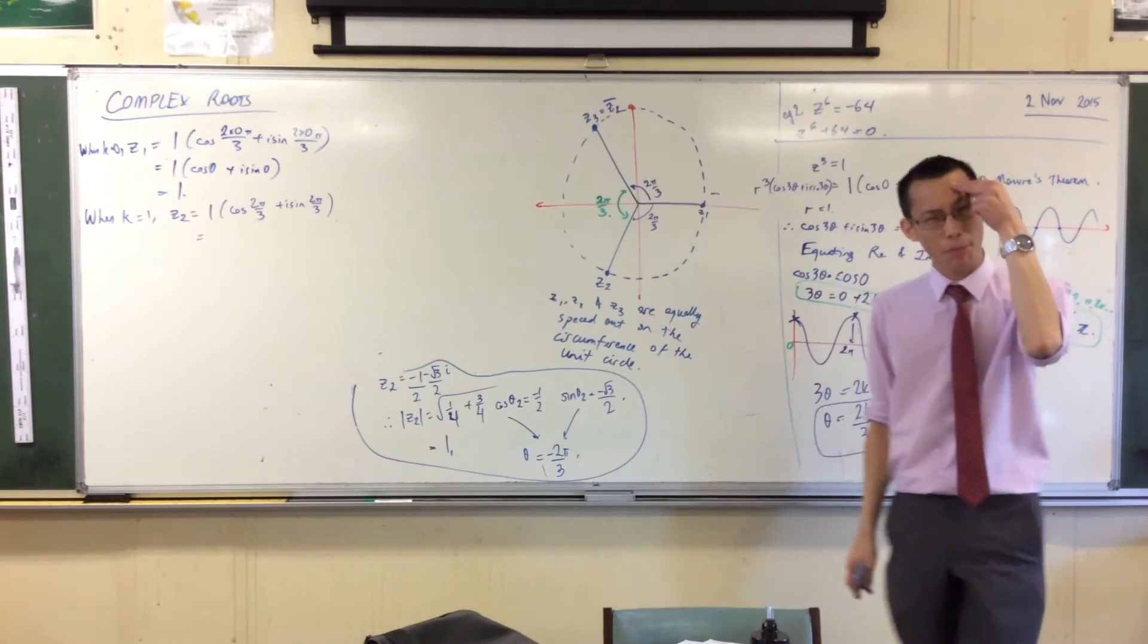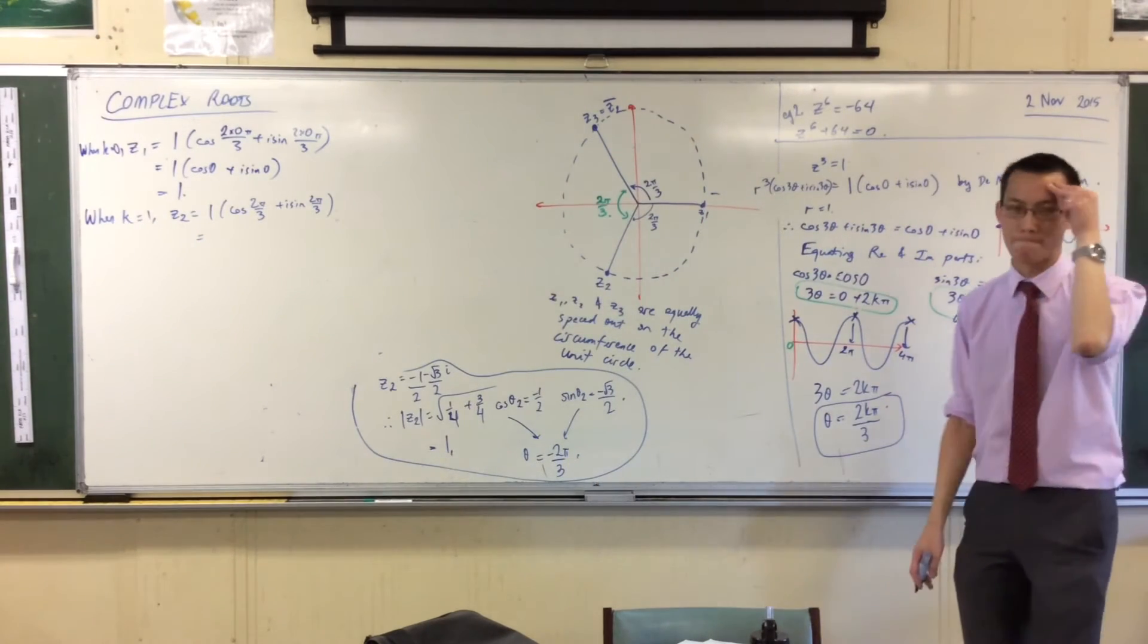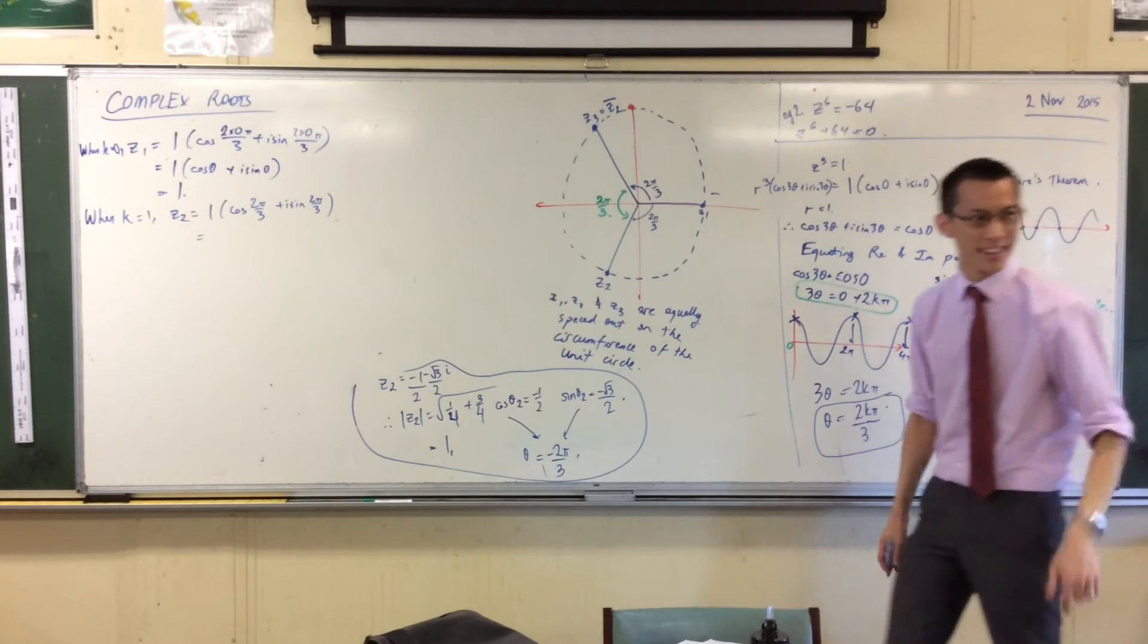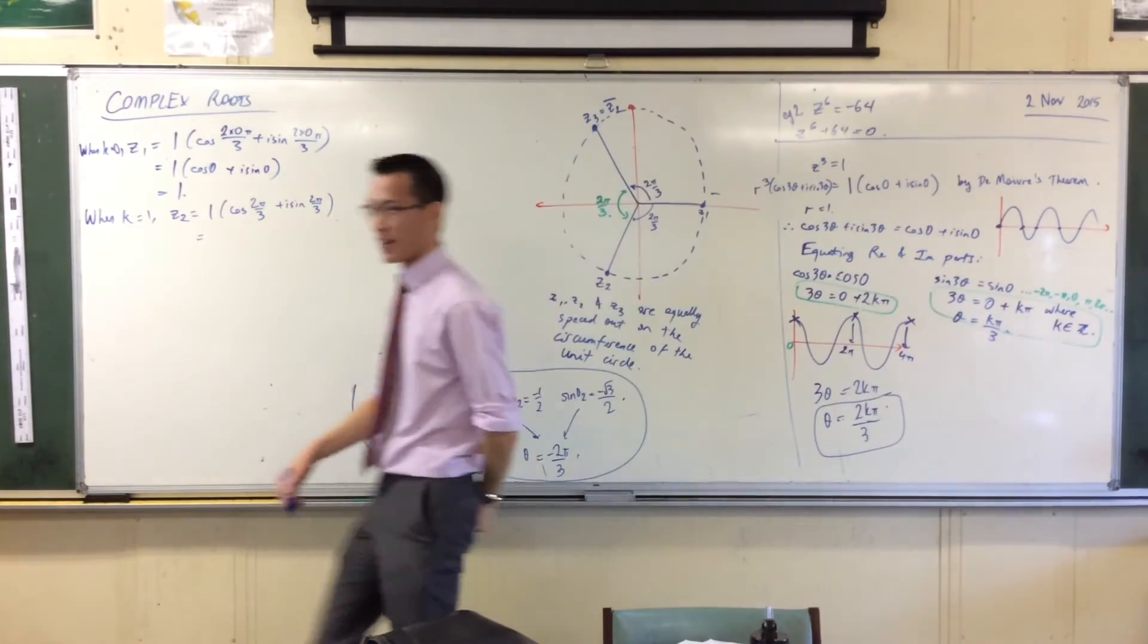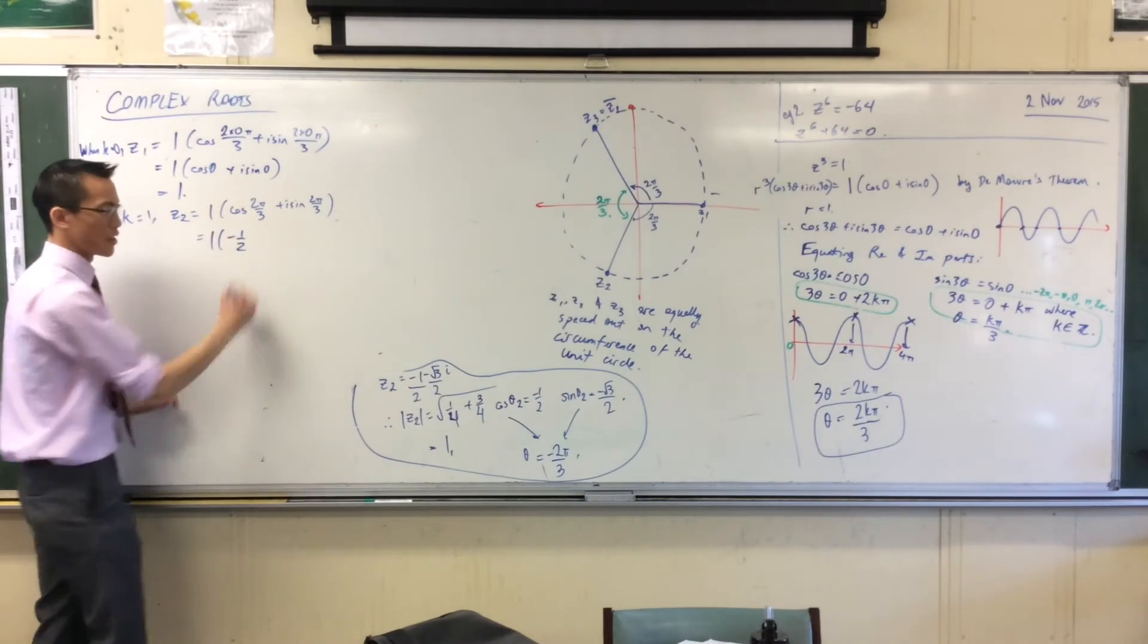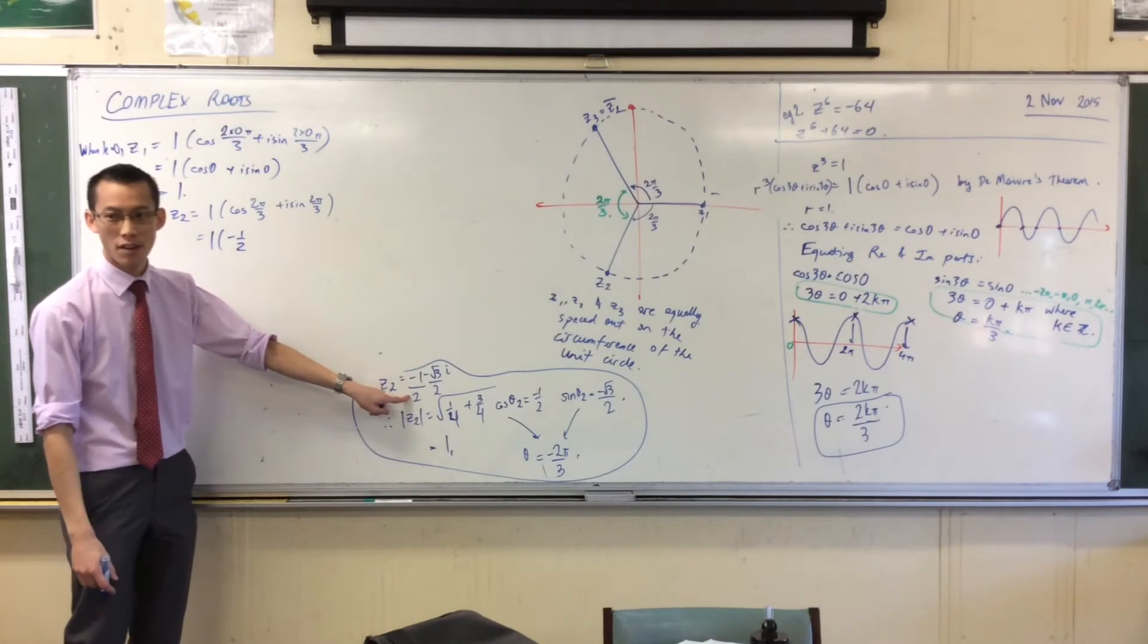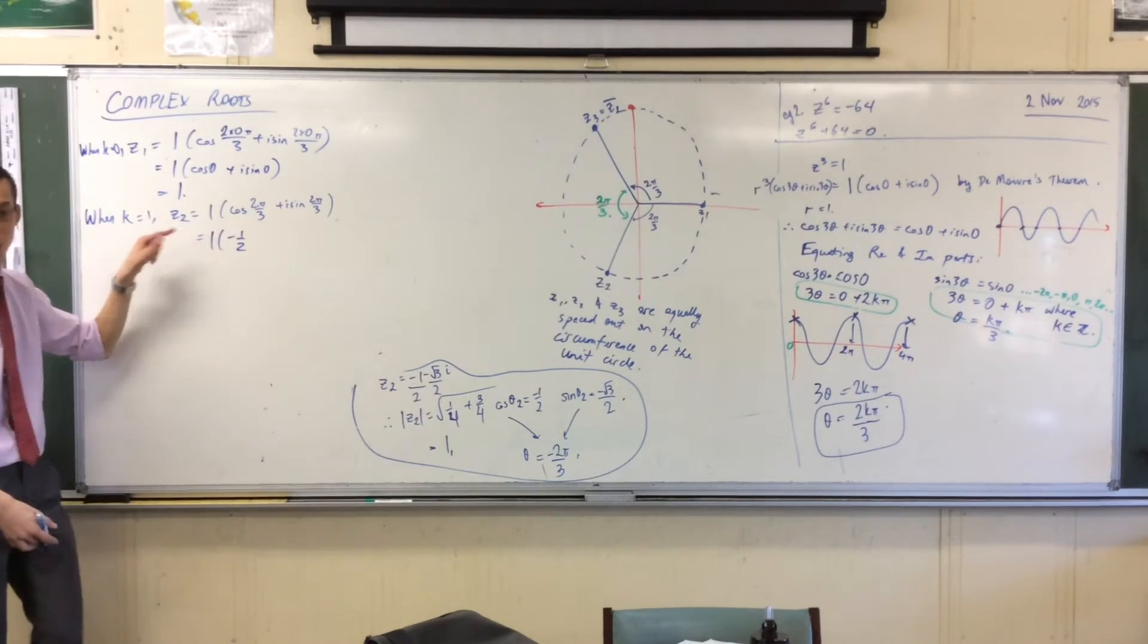cos of 2 pi on 3, cos of 120 degrees. Who's got it? Minus 1 over 2. Minus 1 half. Does that gel with what you were expecting? In fact, we knew we had to get minus 1 half for both of them, when I try z3 in a second.